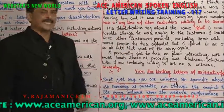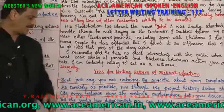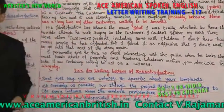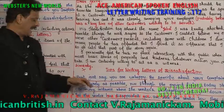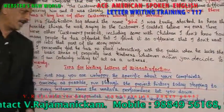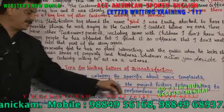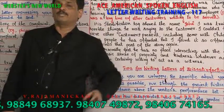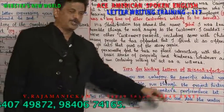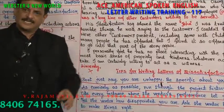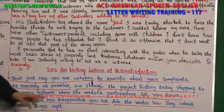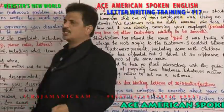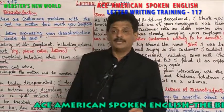Tips for writing letters of dissatisfaction: Don't just say you are unhappy — be specific about your complaints, as concisely as possible. Run through the project history, stopping to cite every instance where the vendor's performance let you down. Clearly write where the seller or service provider has gone wrong. Tell the vendor how disappointed you are. Ask the vendor how they intend to make things right and how they are going to solve the problem. Dissatisfaction letters are common today, so practice writing a few to become proficient.